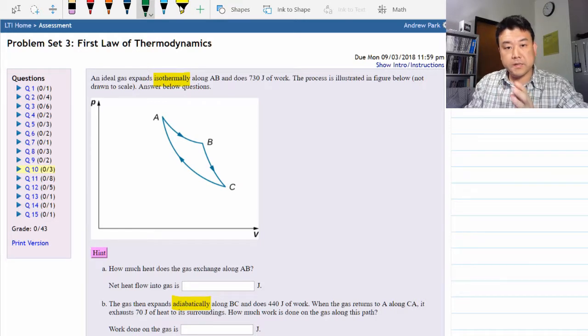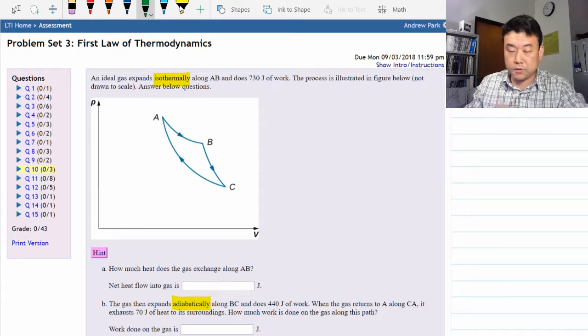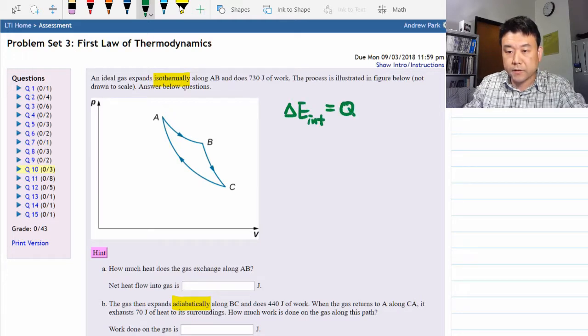This is a first law of thermodynamics problem. You are going to be using the first law at some point so let me write it down. Change in the internal energy is equal to net heat transfer minus work done by the gas.